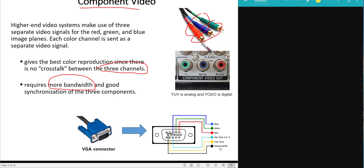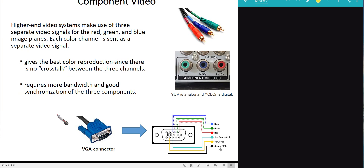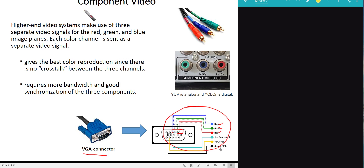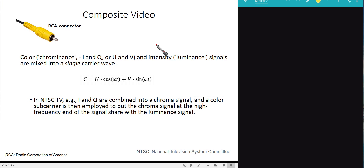If the red component arrives at a different time than the green component, the video will be completely messed up. So synchronization must be very precise. Component video quality is good but requires more bandwidth and careful synchronization. A common component video interface is the VGA connector, which has dedicated pin-outs for the red, green, and blue color channels.